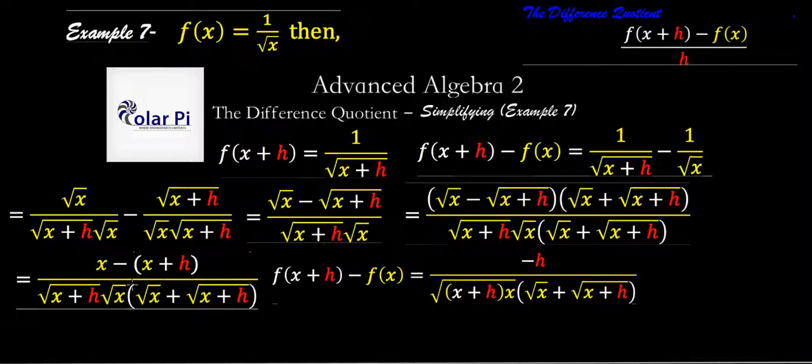Now, this minus h is because we've got x minus x, and that's zero. And then that minus sign distributes to the h also, and therefore, minus h.